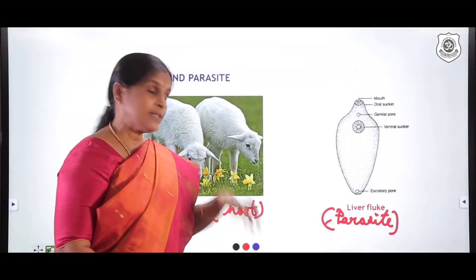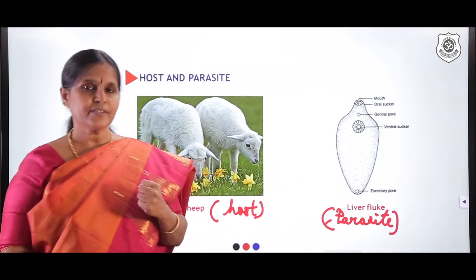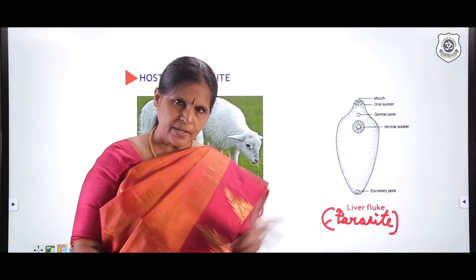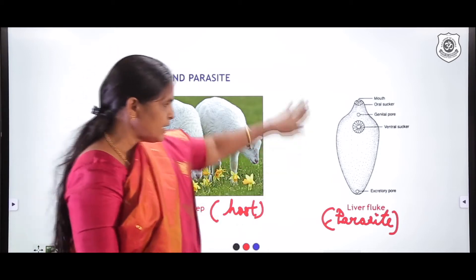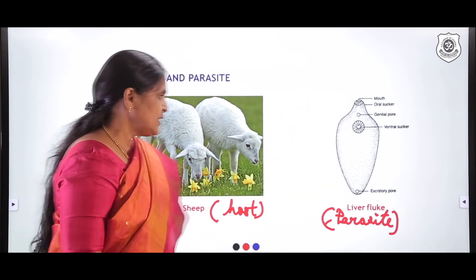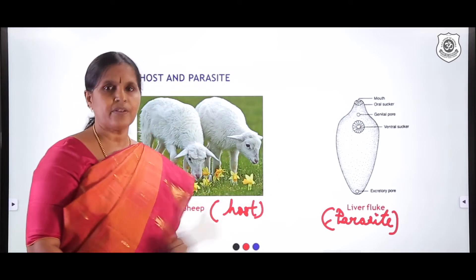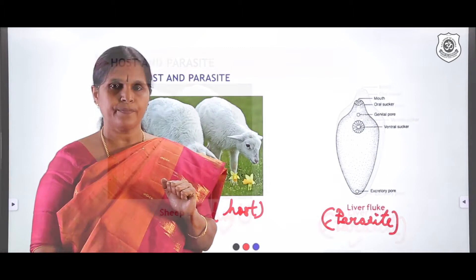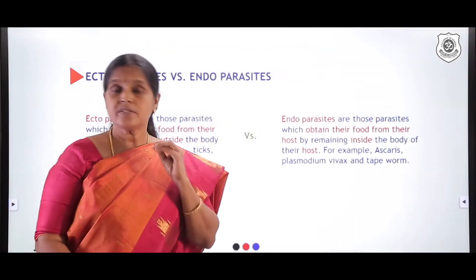Can you recollect which phylum liver fluke belongs to? It belongs to Platyhelminthes — it is a flatworm, a leaf-like organism and a parasite. So in parasitism there are two types of organisms: a host and a parasite. A host is an organism on which or inside which a parasite is surviving. I hope you clearly understood what is a host and what is a parasite.